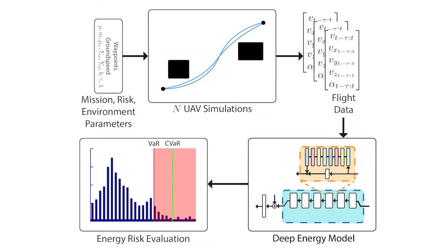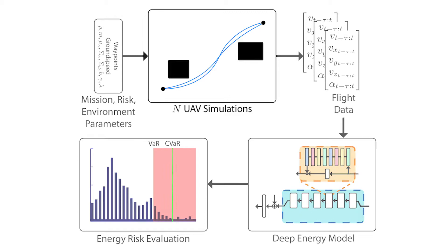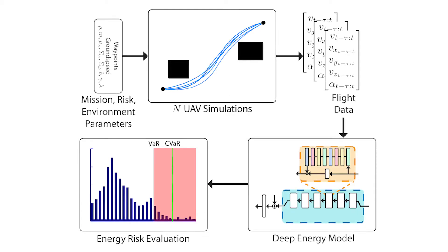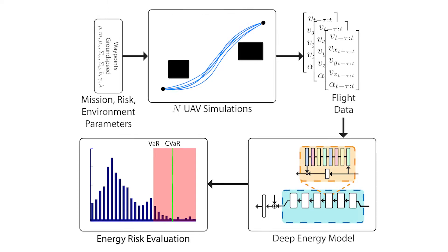In this work, we present a deep learning-based energy model that achieves state-of-the-art results for total energy and power consumption estimation. We additionally present a stochastic simulation framework that uses Monte Carlo runs to provide a distribution on the energy usage, to then find the conditional value at risk in the risk space. These contributions combined create a risk assessment method to help determine flight risk levels, leading to safer operations.